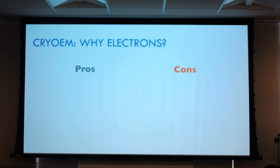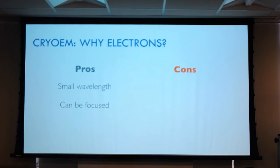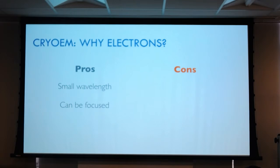Why electrons — what's good and what's bad about electrons? Pros: small wavelength — we're on the order of picometer wavelength, so if you think of that, light is on the order of hundreds of nanometers. If you're an expert crystallographer you don't expect more than half-angstrom resolution. Also, we can actually focus electrons, which is very convenient because if you want to use it in the microscope you want to be able to change depth of field. Cons: you can actually damage your sample — there's a lot of energy going through.